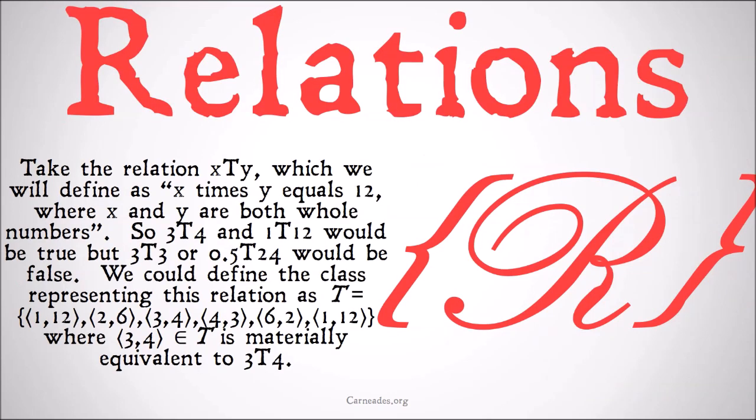Take the relation X T Y, which we'll define as X times Y equals 12, where X and Y are both whole numbers. So 3 T 4 and 1 T 12 would be true — 3 bears the relation 3×4=12 to 4, and 1 bears the relation 1×12=12 to 12. But 3 T 3 or 0.05 T 24 would be false, since 3 times 3 doesn't equal 12, and 0.05 isn't a whole number, so it doesn't fit all of the criteria of the relation.